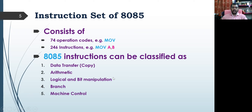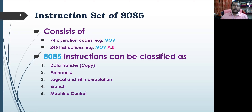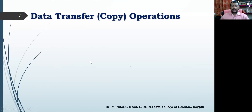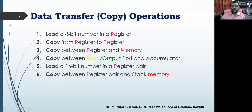The classification of 8085 instructions includes: data transfer, arithmetic, logical or bit manipulation, branch, and machine control. We have done data transfer; branch instructions are not yet covered. So in the last two programs — copy and exchange — we will understand branch instructions. These are the classifications of 8085 instructions, and we have data transfer instructions to focus on.